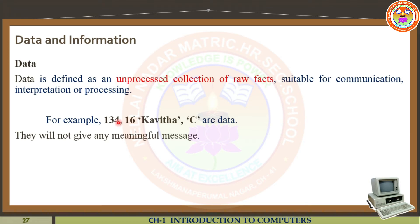First of all, in our computer, we have to store the data. So what is data? Data is defined as an unprocessed collection of raw facts. That is known as data. And it is suitable for communication, interpretation, or processing.